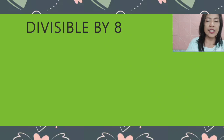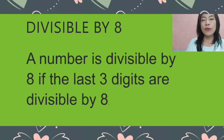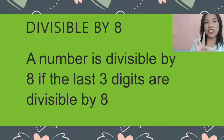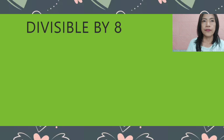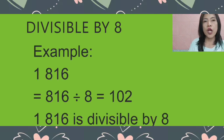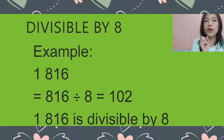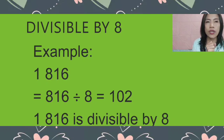We have divisible by 8. A number is divisible by 8 if the last 3 digits are divisible by 8. We look at the last 3 digits and divide them. Example: 1,816. The last 3 digits are 816. When we divide 816 by 8, it gives us 102. Therefore, 1,816 is divisible by 8.